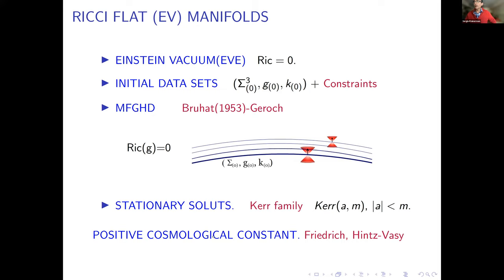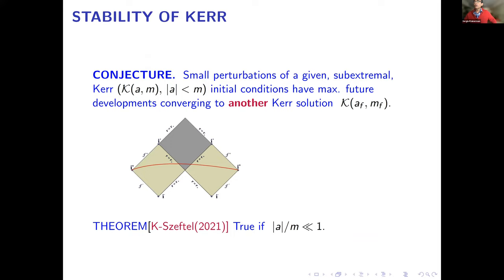I should note that I'm not going to talk about the cosmological case, where Ricci equals lambda (the cosmological constant) rather than zero. That is also an extremely interesting case but differs substantially from the one we're interested in — in particular, you cannot talk about isolated systems or asymptotic flatness in the same sense. There are very interesting results there, including recent results of Hintz and Vasy, but I won't discuss them today.